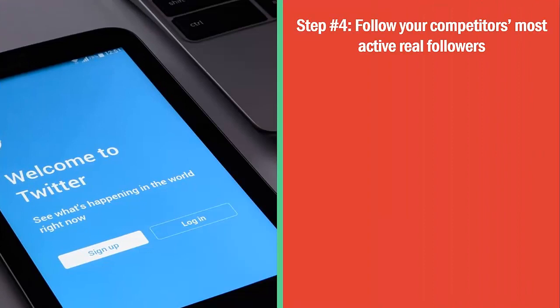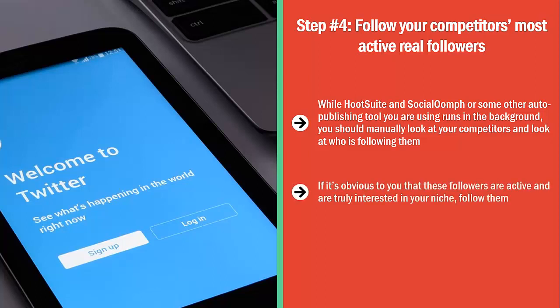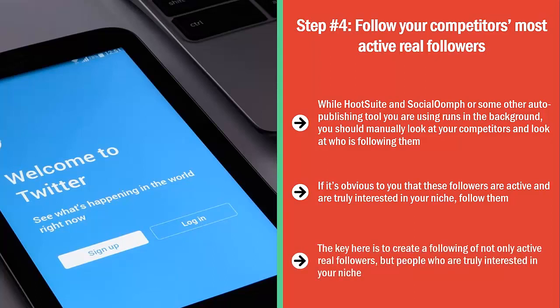Step number four: follow your competitors' most active real followers. While Hootsuite and Social Oomph or some other auto-publishing tool runs in the background, you should manually look at your competitors and see who is following them. Go to those accounts and pay attention to the activities of those followers. If it's obvious that these followers are active and truly interested in your niche, follow them. On Twitter, a certain percentage of people — around 20-30% — will automatically follow you back when you follow them.